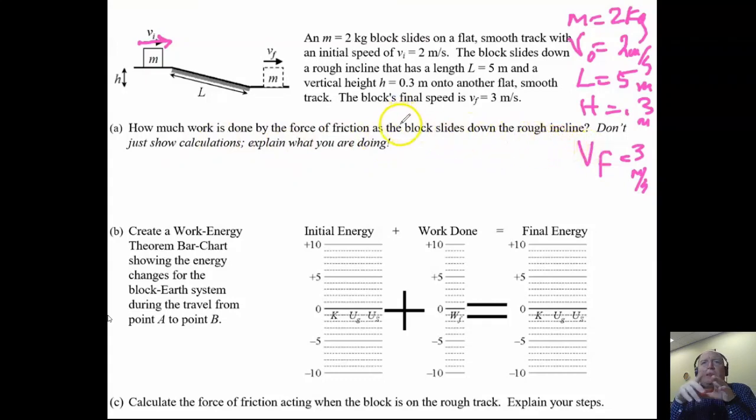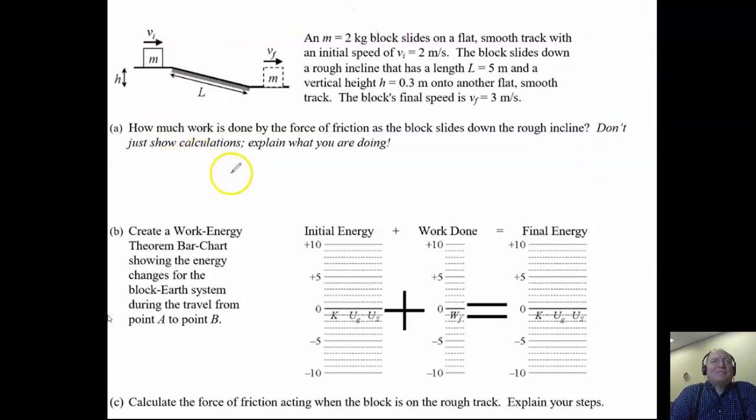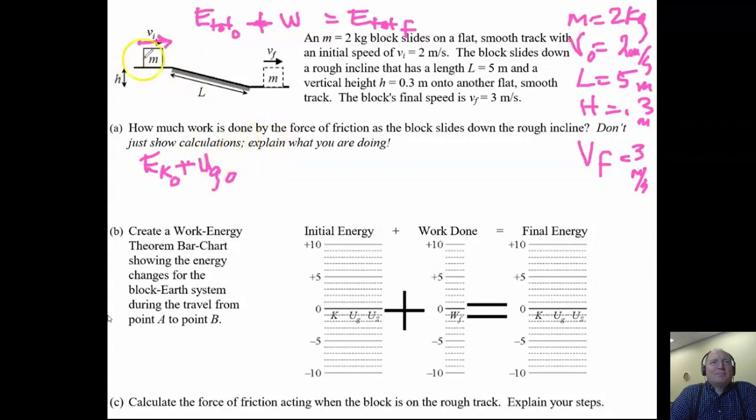V one equals two meters per second. Block slides down a rough incline, L equals five meters, and it has a vertical height here of height equals 0.3 meters onto another flat surface. The block's final speed is three meters per second. I feel like I have somebody who's waiting. So let's see what they want to know.